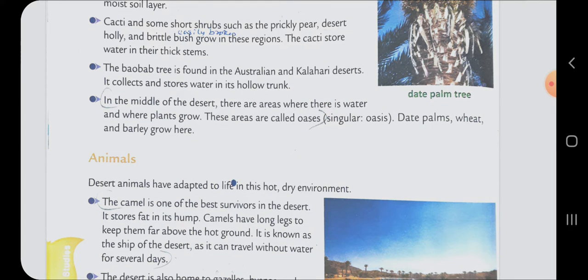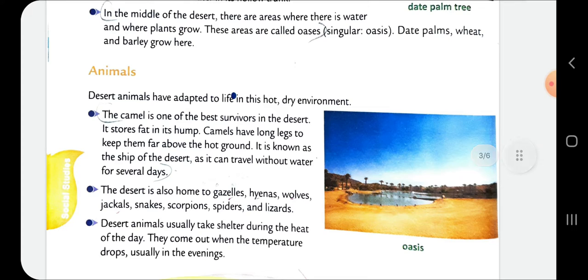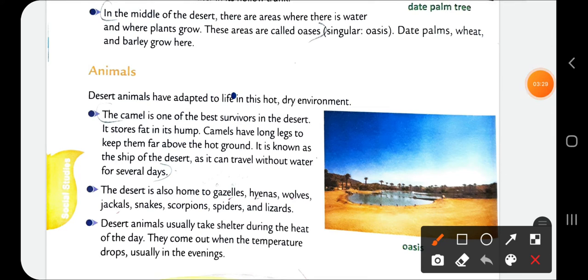Then third question: Why is camel known as the ship of the desert? That is given in the same page, Animals section. The camel is one of the best survivors in the desert. It stores fat in its hump. Camels have long legs to keep them far above the hot ground. It is known as the ship of the desert as it can travel without water for several days. That is the answer to question number C, the third question.